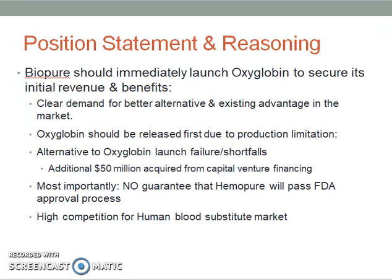If the launching of Oxyglobin fails or there are shortfalls in its revenue, BioPure still has an additional $50 million acquired from a recent round of venture capital financing. This capital is enough to support BioPure's operations for another 2 years, by which time Humapure will be ready for its release. Most importantly, there is no guarantee that Humapure will pass the FDA approval process — it is still undergoing Phase 3 clinical trials where rejections could occur at any point. The case study also noted several high-profile product failures in the marketplace at that time, and competition within the human blood substitute market cannot be ignored.